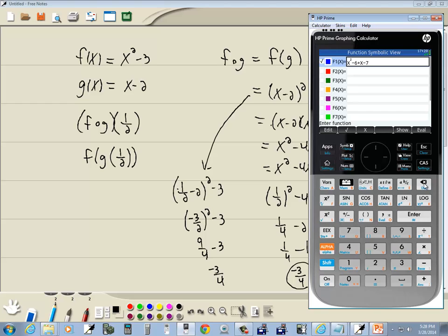I'm going to do my backspace to get rid of that. I'll put my f(x) on f1. So that's going to be x squared minus 3. Enter. And on f2, I'll put my g(x). So I'll have x minus 2. Enter.